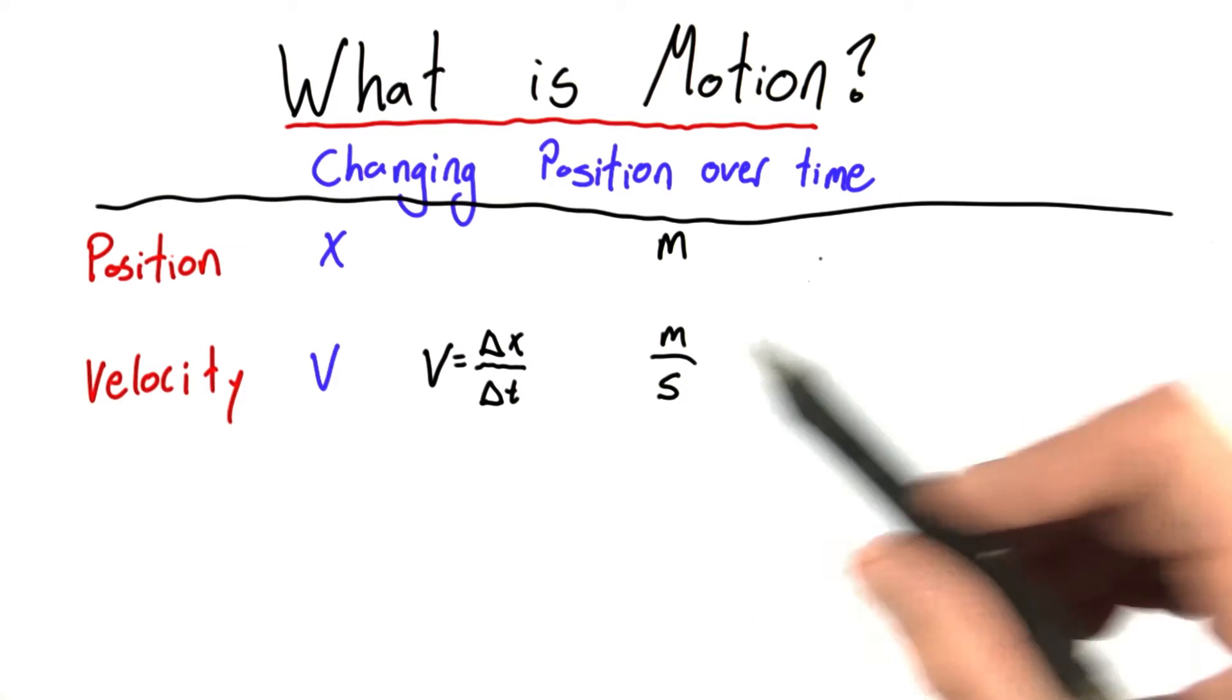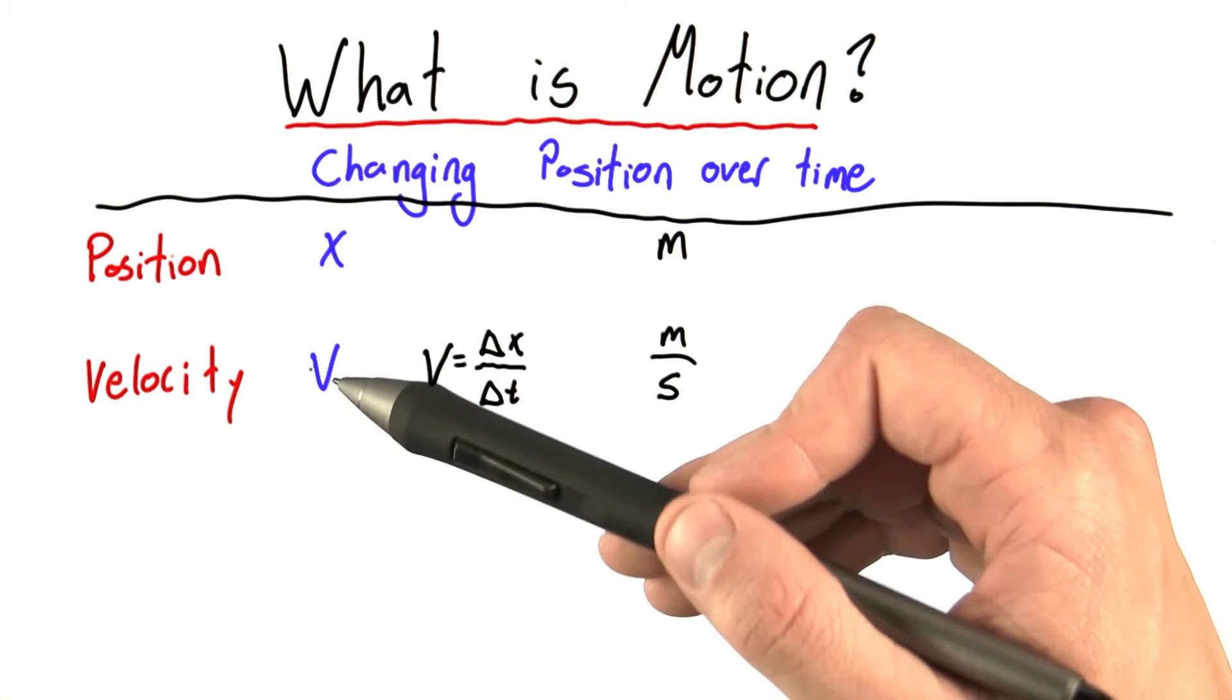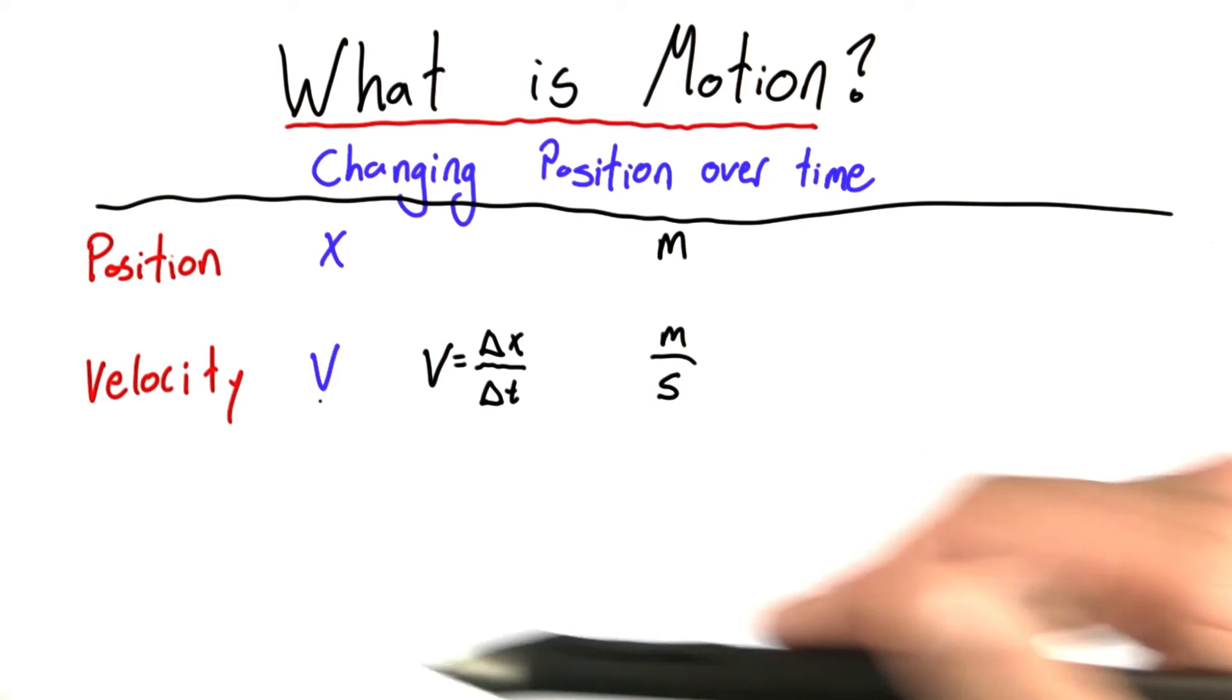If we were Aristotle, we would stop here, because if an object falls with constant velocity, the velocity never changes. We don't really care about anything else. Position and velocity seem to be enough to quantify motion.